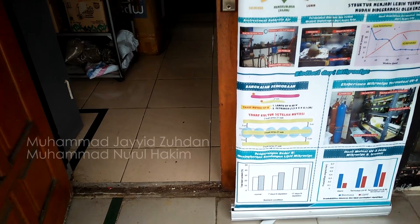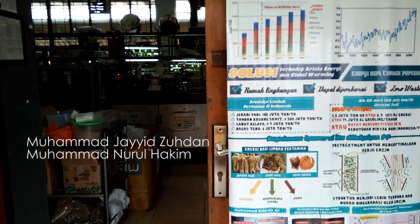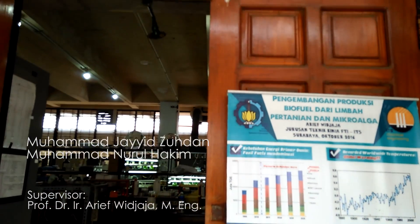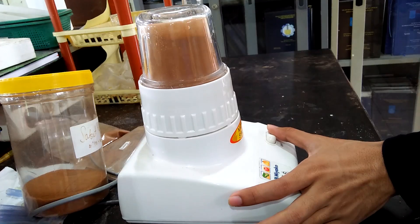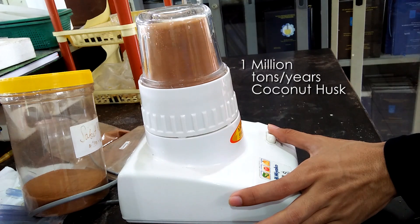Muhammad Jahid Zuhdan and Muhammad Nurul Hakim from AHHA team guided by Prof. Dr. Insinyur Arefwijaya M. Meng propose reducing sugar production from coconut husks that are available as many as 1 million tons every year.